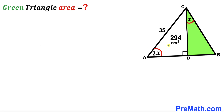Welcome to Premath. In this video we have got triangle ABC along with perpendicular CD, and as a result we get two triangles: a white right triangle and a green right triangle.